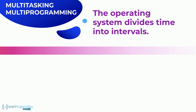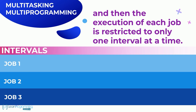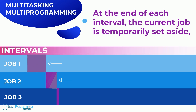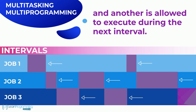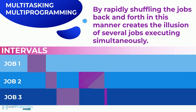In both multitasking and multi-programming, the operating system divides time into intervals and the execution of each job is restricted to only one interval at a time. At the end of each interval, the current job is temporarily set aside and another is allowed to execute. By rapidly shuffling jobs back and forth in this manner, it creates the illusion of several jobs executing simultaneously.